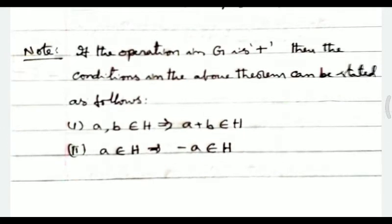If the operation in G is plus, then the conditions in the above theorem can be stated as follows. Number one: a, b belongs to H implies a plus b belongs to H. Number two: for all a belongs to H, minus a belongs to H. This is the inverse condition.